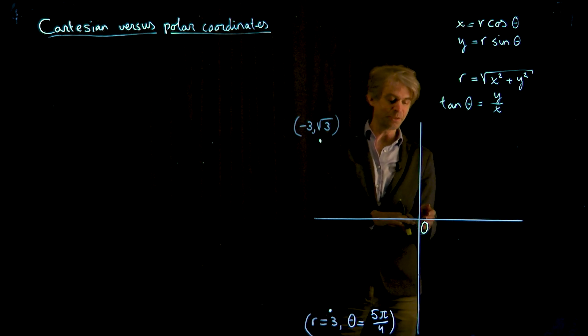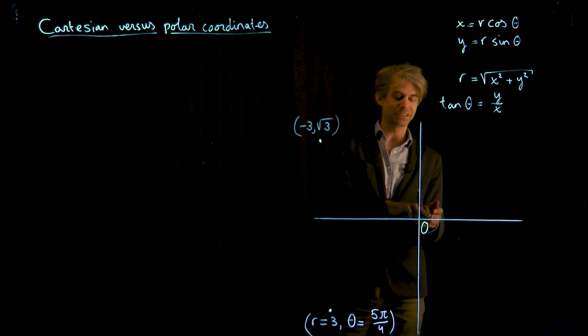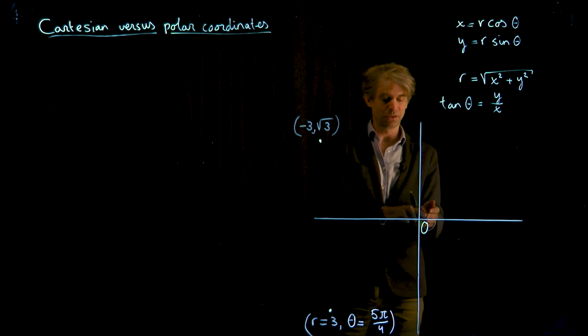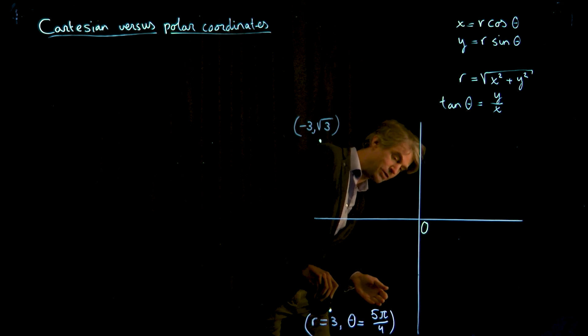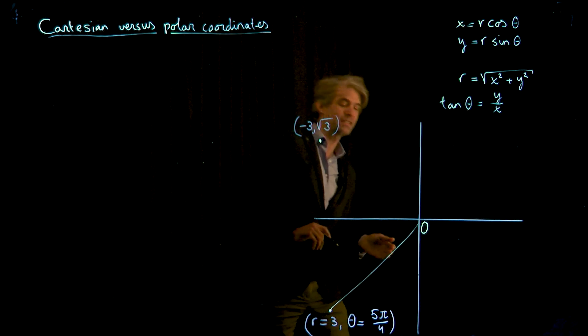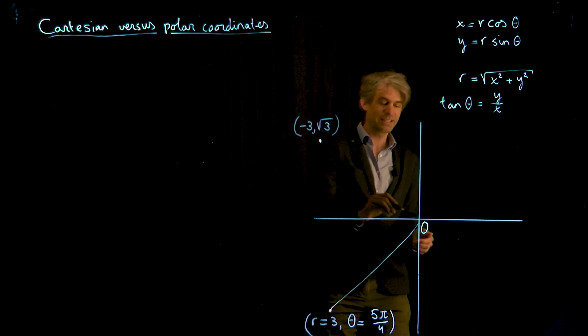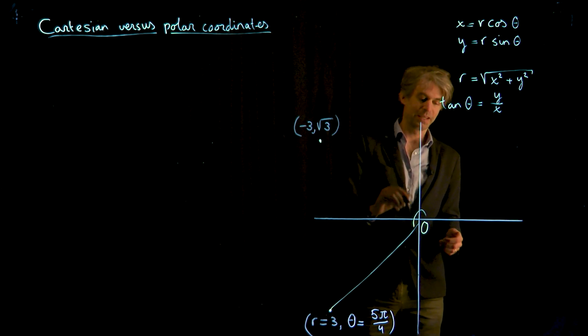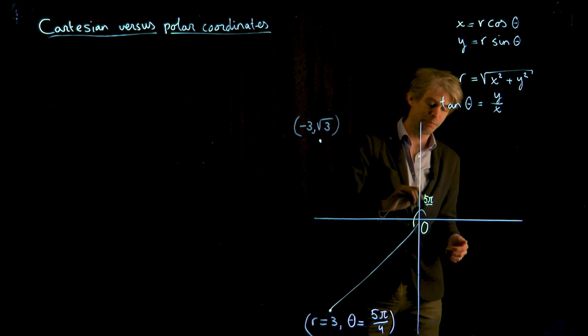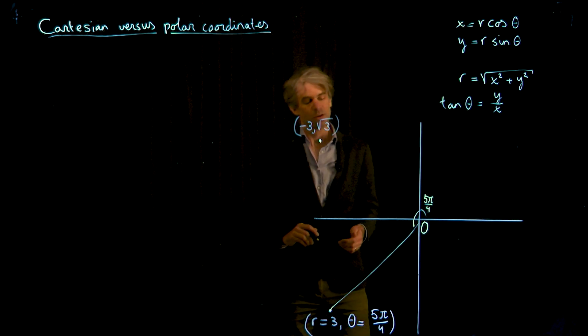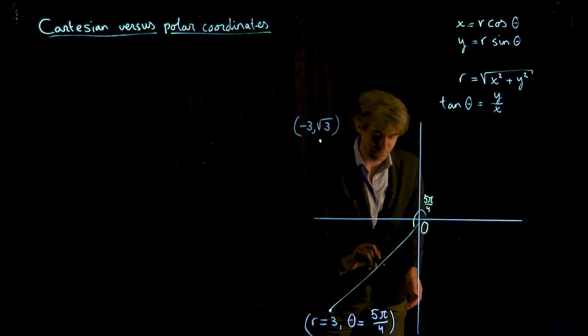You give an angle with the positive x-axis and the radius. So in this case you go around like this, I could draw it already. If this is the radius, not bad, then this angle is in this case 5 pi over 4 radians. And the distance here equals 3.